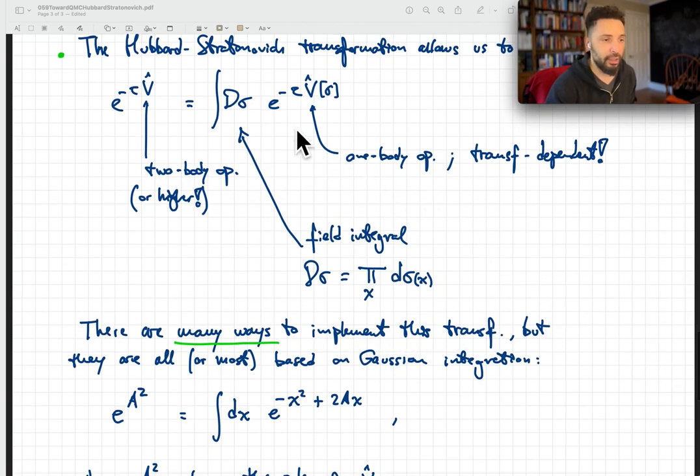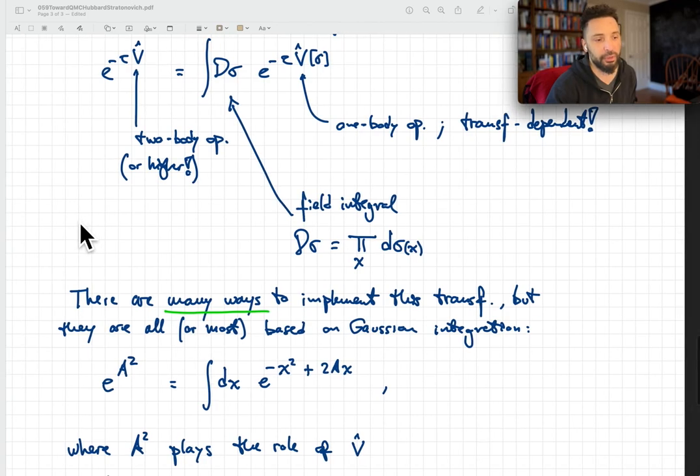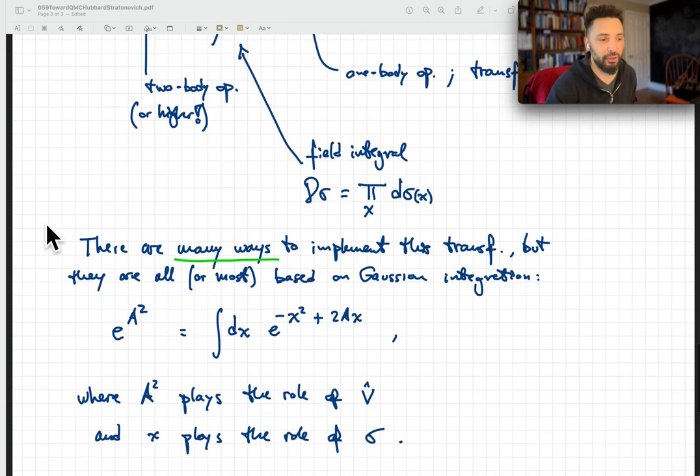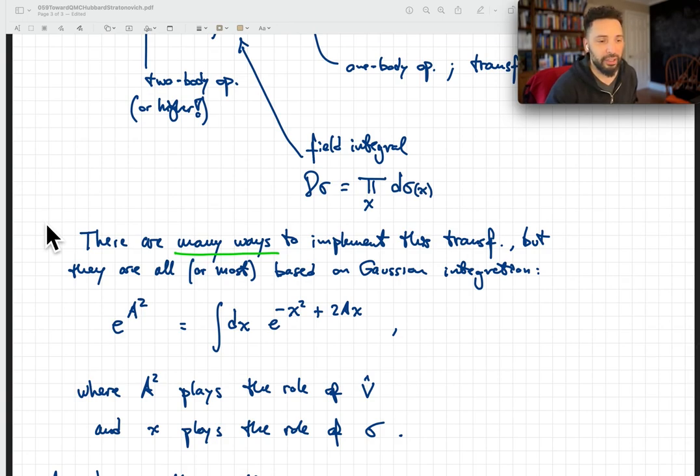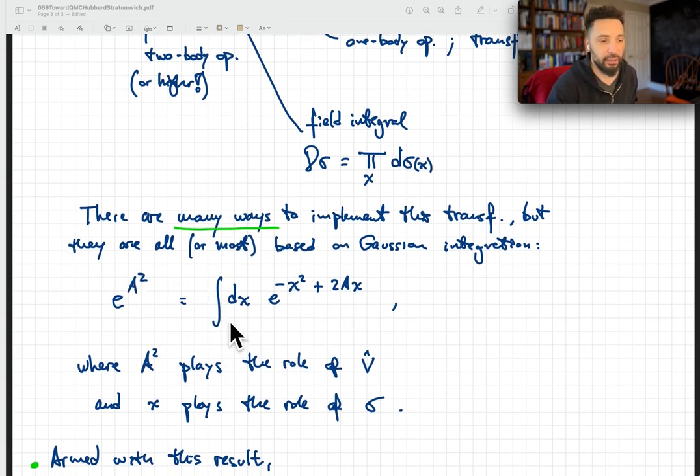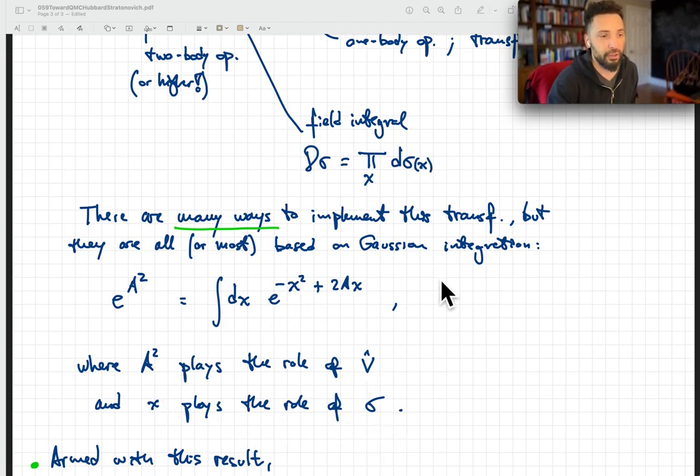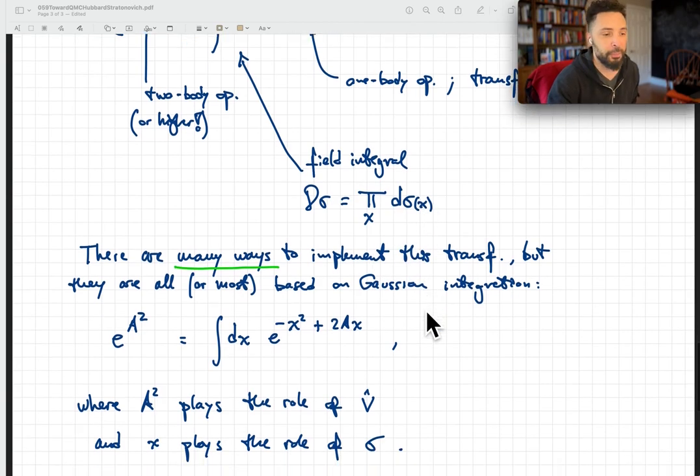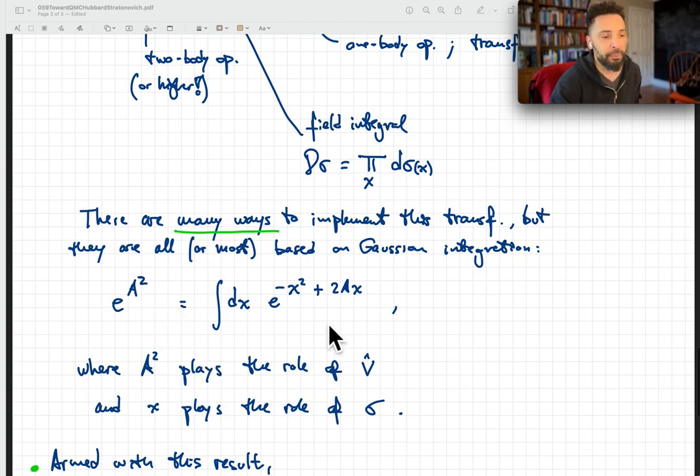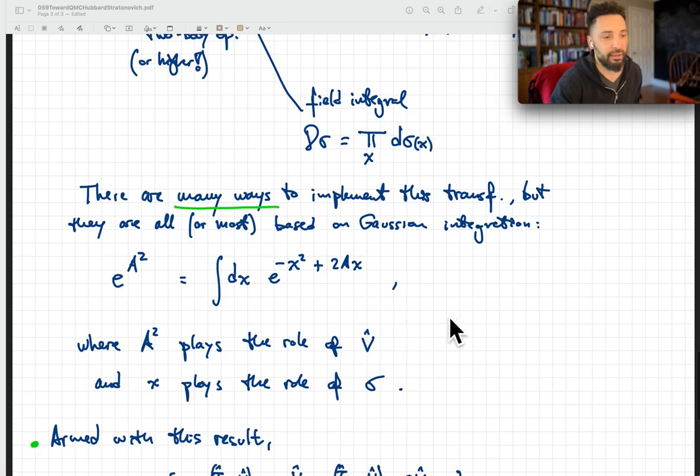There are many ways to implement this transformation that will specify the choice of this one-body operator that will return the two-body operator that you're interested in. But most of the flavors of the Hubbard-Stratonovich transformation involve some kind of Gaussian integration. Essentially, what we can say is that up to an overall constant, the e to the a squared is an integral over dx of e to minus x squared plus 2ax. Here, a squared plays the role of the interaction, and the x plays the role of sigma, of the auxiliary field.